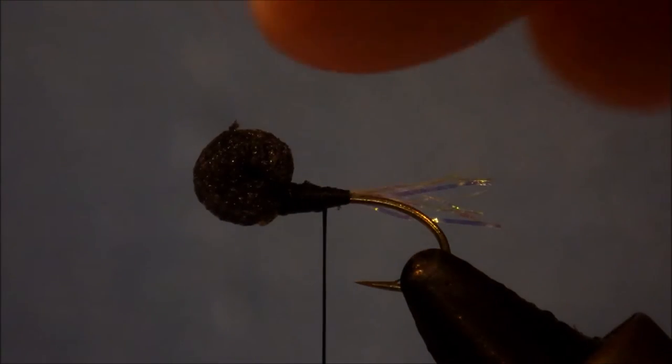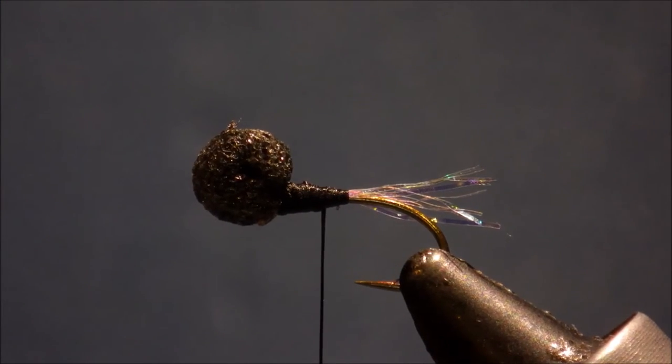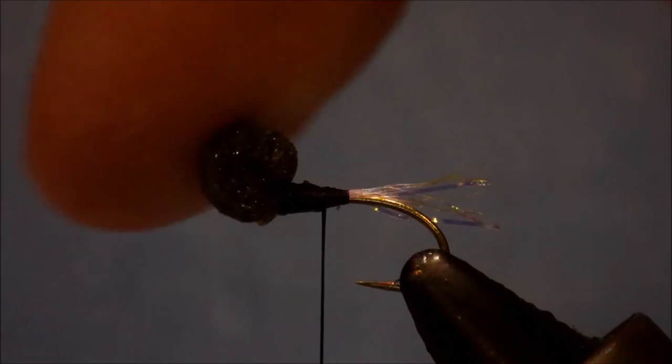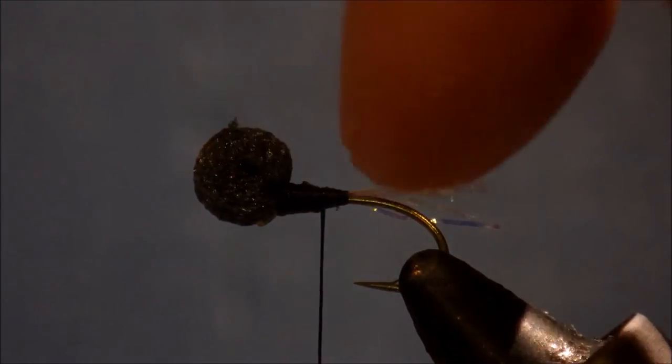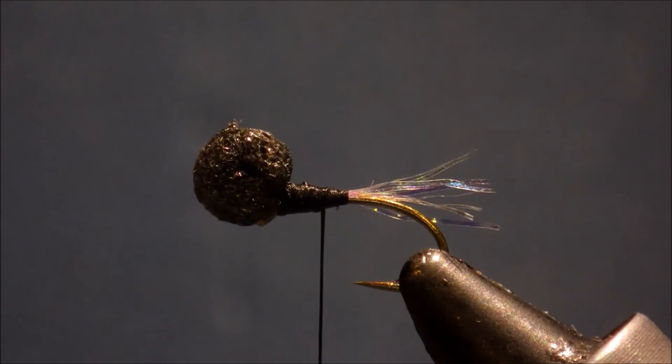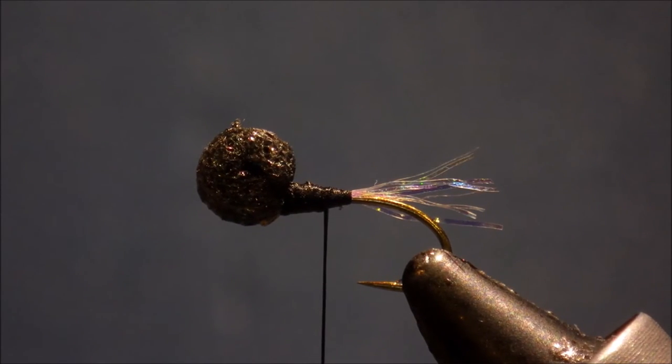Now, I know that might look a wee bit big in comparison to the rest of the fly, but this foam is lost in the surface film anyway. You don't need to worry about that. The fish are just looking in the mirror, and you need to make sure you've got enough foam that it's floating.